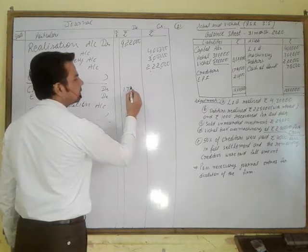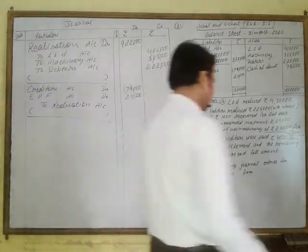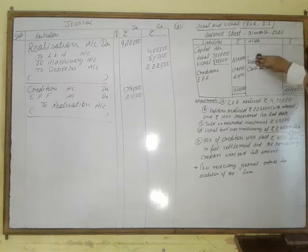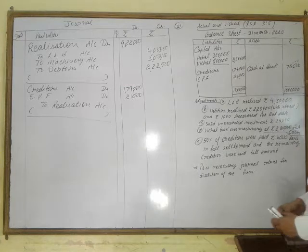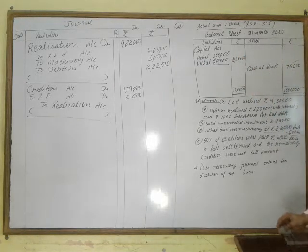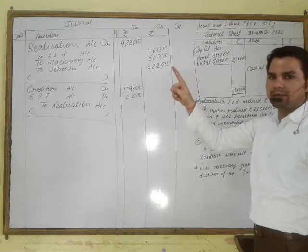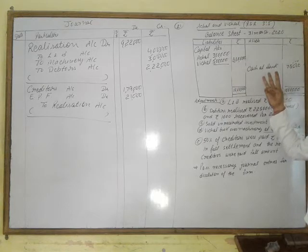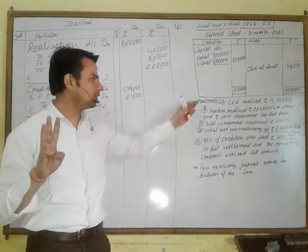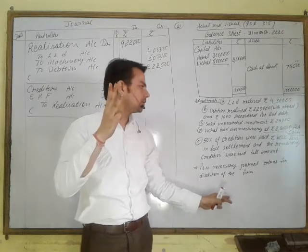The credit amount for creditors is ₹1,79,000, and EPF is ₹21,000. Now only three accounts remain open: the Realization Account, Capital Accounts, and Bank Account. All adjustments going forward will be passed using only these three accounts — Realization, Capital, and Bank.